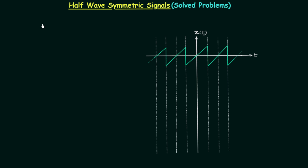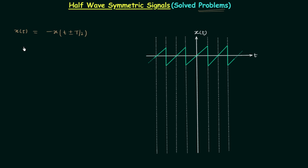We already know what half wave symmetric signals are and how to check for half wave symmetry. In this lecture we will solve two problems based on half wave symmetric signals and check if a given signal is half wave symmetric or not. The condition is: if signal x(t) is half wave symmetric, then it should be equal to minus x(t ± T/2), where T is the time period. You perform either a left shift or right shift by T/2, then perform amplitude reversal. If the obtained signal is the same as the original, then x(t) is half wave symmetric.